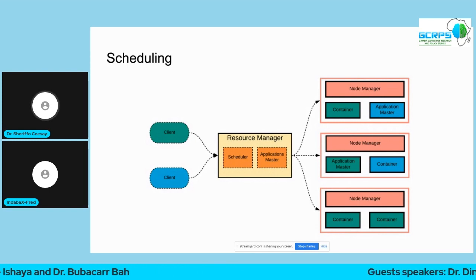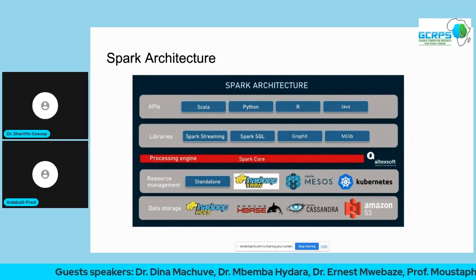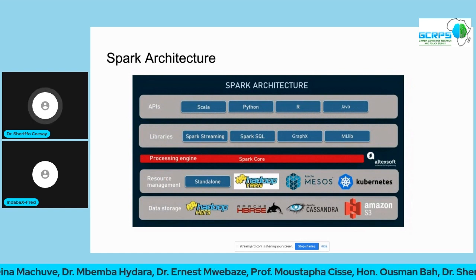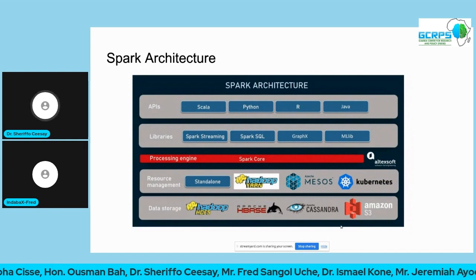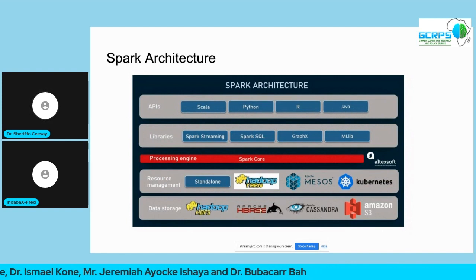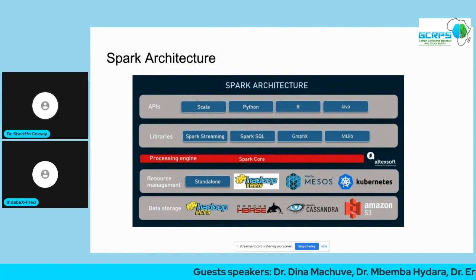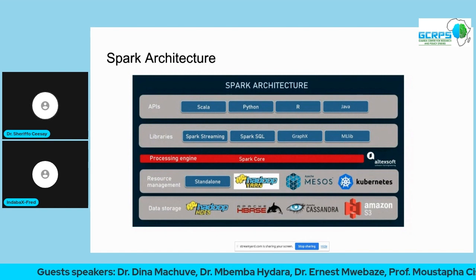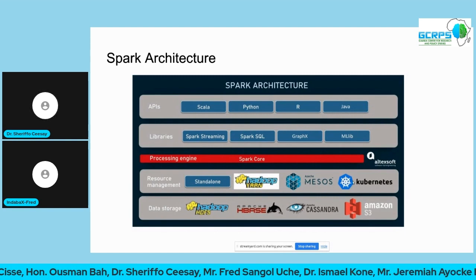Spark is the compute engine that interacts with this stored data to process it, and it has been growing quite well over the years. Looking at the architecture from the bottom up: the storage layer includes HDFS and Hadoop, but also key-value stores or Amazon S3. Above that is resource management — YARN — and now also Kubernetes, which I highly recommend looking into if you're interested in distributed systems.